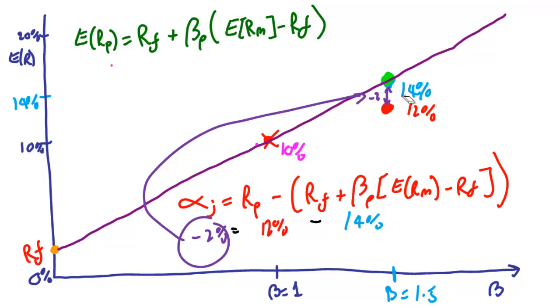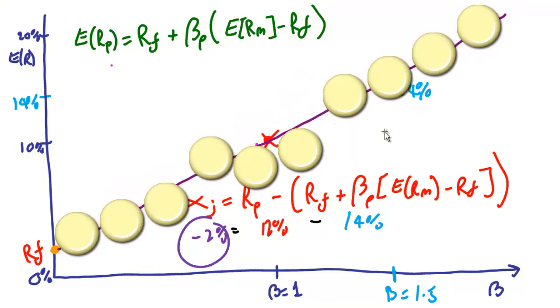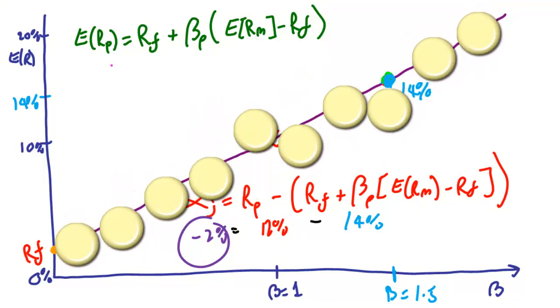Again, as you and all the other fund managers sell this off, the asset price drops, and so its relative return increases. This self-leveling system drives the return back up to 14%. Basically, all stocks all the time are buzzing around the security market line.